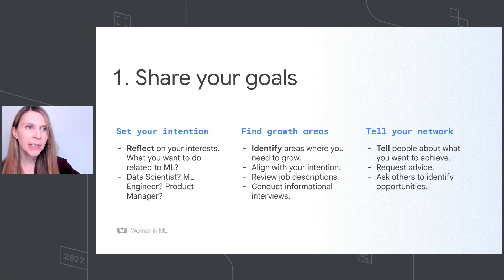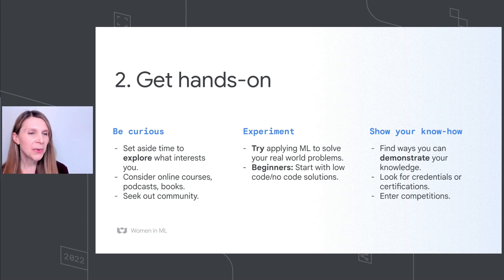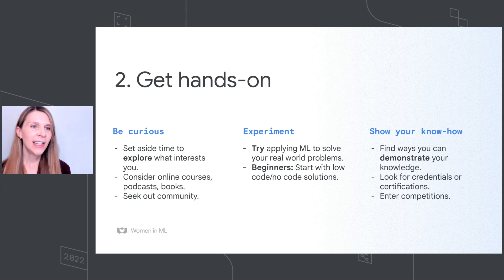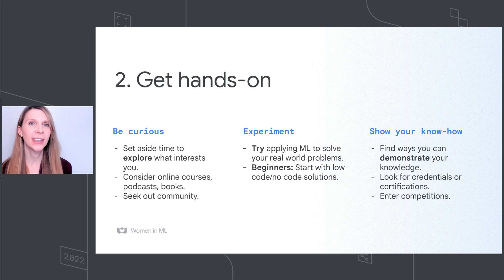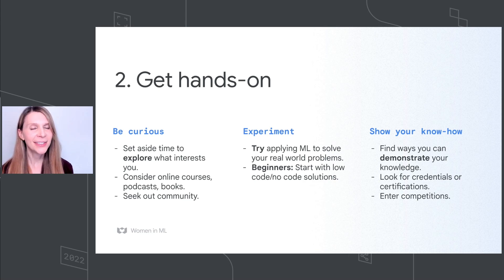The next step that is really important is to get hands-on. I think you've been hearing a lot of different ways that you can do that today — some really cool demos and examples. So definitely get hands-on. In terms of how you can do that, a few key steps: one, just be curious. I think many of you are here today because you're curious — you want to learn more. But really set aside time to allow yourself to explore that curiosity. Maybe there's online courses, forums, communities, podcasts, or books that you want to take time to understand and explore. That was something really helpful for me — a few colleagues had recommended some great books to start with, and those were so helpful in allowing me to better understand machine learning and ways to get involved.